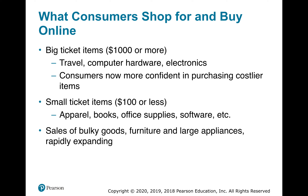Sales of bulky goods such as furniture and large appliances are rapidly expanding. Online reviews have played a huge role in that. We actually just bought a recliner online, which was a first for my wife and me. My wife did a lot of research, found some pretty good reviews, and it came with free shipping and free returns — so if we didn't like it, we could just send it back. We're in the market for a new couch and will probably do quite a bit of research online before purchasing.